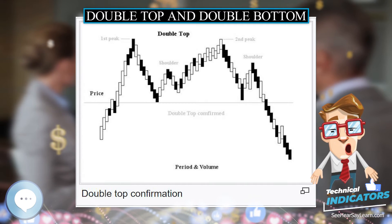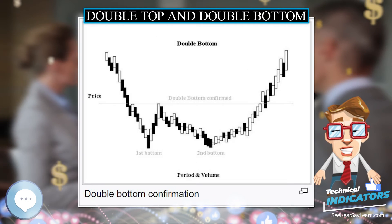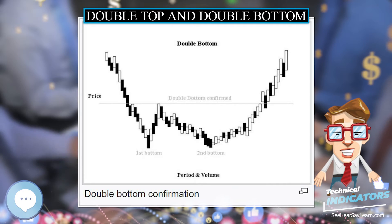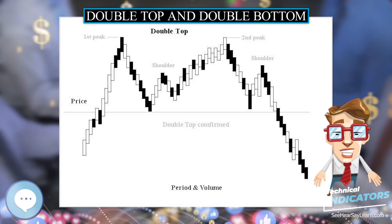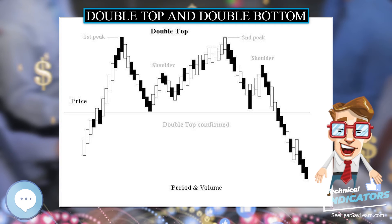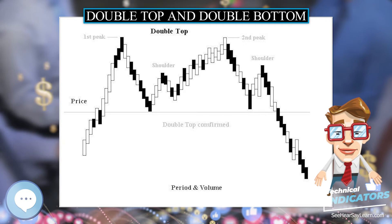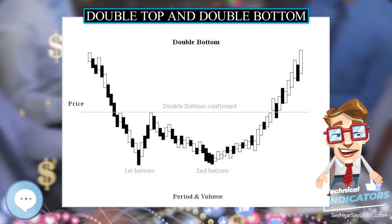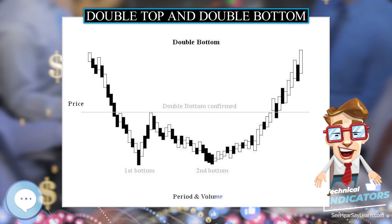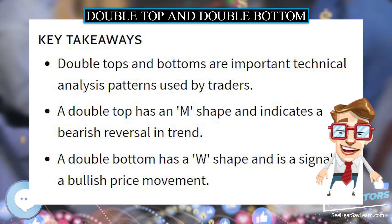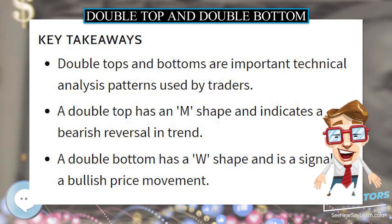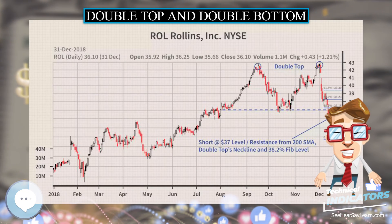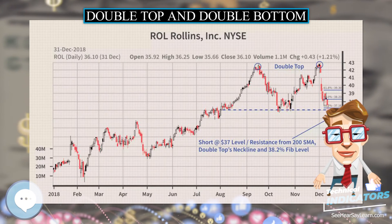The Double Bottom is the end formation in a declining market. It is identical to the double top, except for the inverse relationship in price. The pattern is formed by two price minima separated by a local peak defining the neckline. The formation is completed and confirmed when the price rises above the neckline, indicating that further price rise is imminent or highly likely.